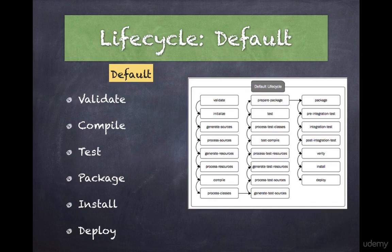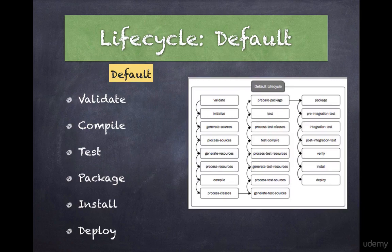Because the default lifecycle clearly defines the ordering of phases, you can generate an artifact simply by running the command mvn package. Maven will automatically execute all the phases prior to the requested phase. In this example, Maven will run phases such as compile and test prior to running the package phase. This means developers and configuration managers only have to learn and use a handful of commands.